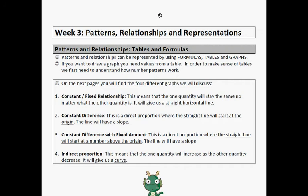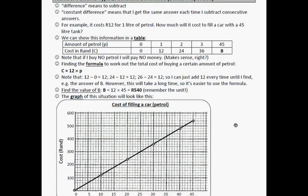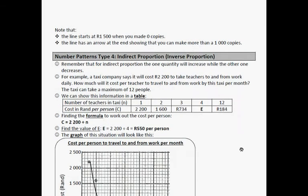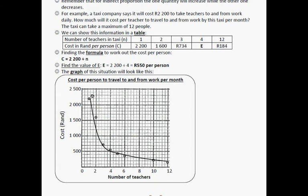A constant difference. This is a direct proportion where the straight line will start at the origin. Let's go to the origin. This is the origin, the point (0,0). And the line will have a slope, so it's a skewed line, not a horizontal line or a downwards line. A constant difference with a fixed amount. This is a direct proportion with a straight line that will start at a number above the origin. So this one starts at the origin, and that one starts above the origin. And this line will have a slope. And then an indirect proportion. This means that one quantity will increase as the other quantity will decrease, and it will give us a curve.